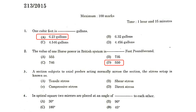The section subject to axial pushes acting normally across the section — the stress set up is known as compressive stress. In an optical square, two mirrors are placed at an angle of 45 degrees to each other.